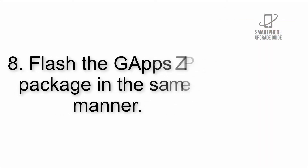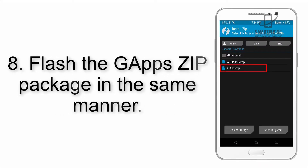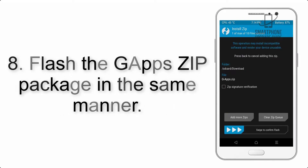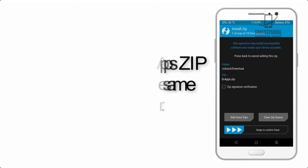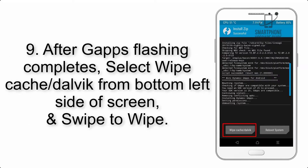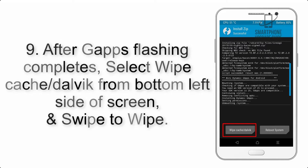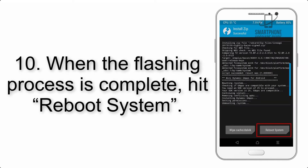Step 8: Flash the GApps zip package in the same manner. Step 9: After GApps flashing completes, select Wipe Cache and Dalvik from the bottom left side of the screen and swipe to wipe. Step 10: When the flashing process is complete,